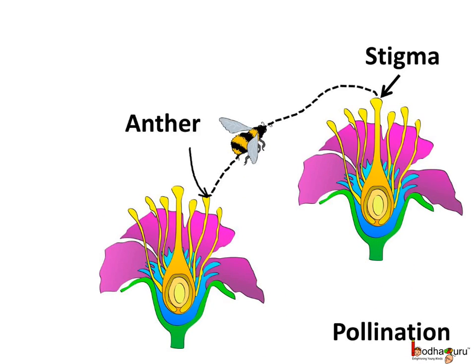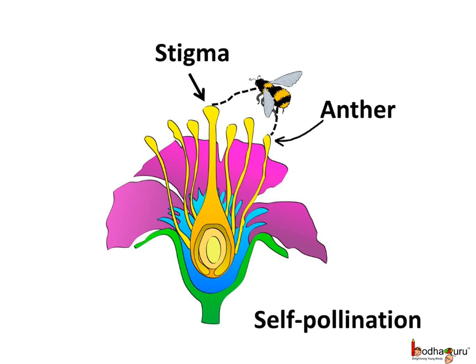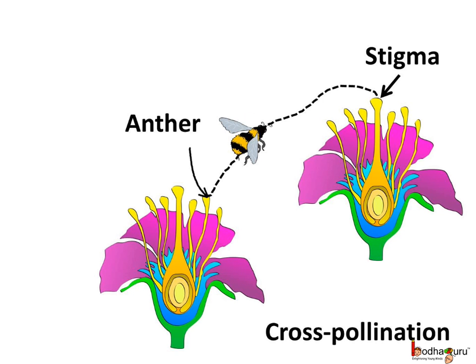We also know that insects help in pollination — that is, the transferring of pollen grains from the anther part of the male organ, which is the stamen, to the stigma part of the female organ, which is the pistil or the carpel. If the pollen grains are transferred to the stigma of the same flower, it is called self-pollination. And when the pollens are transferred from the anther of one flower to the stigma of another flower of the same kind, it is called cross-pollination.